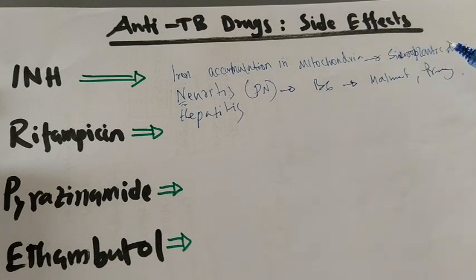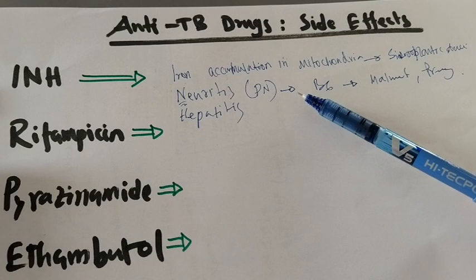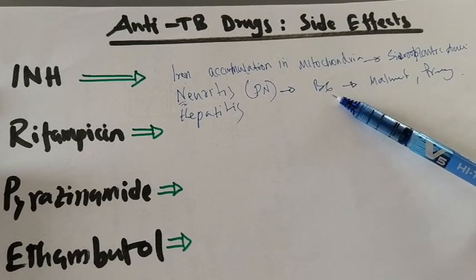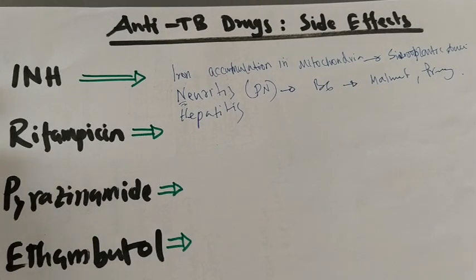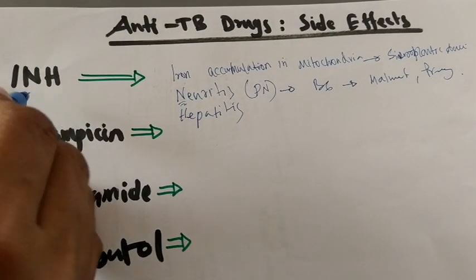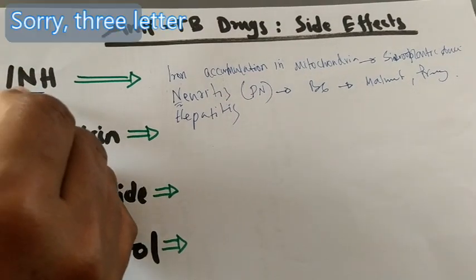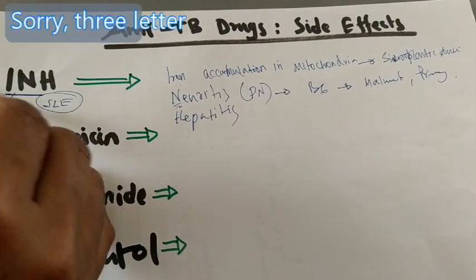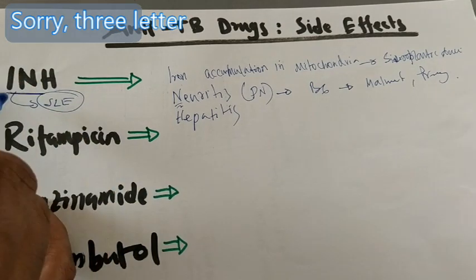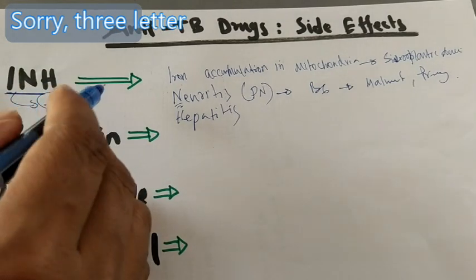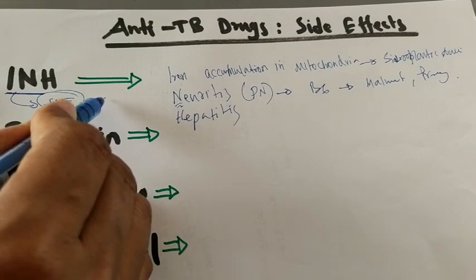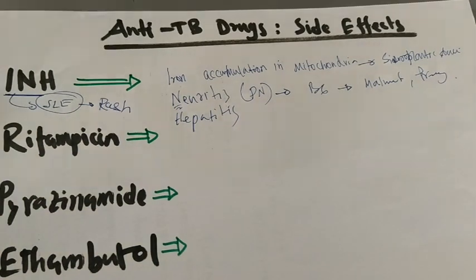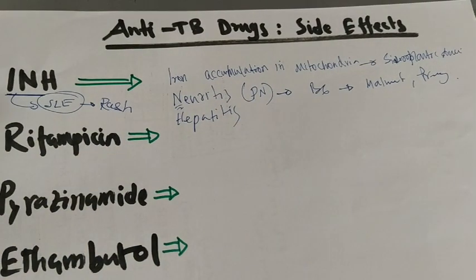So to recap: INH — I for iron accumulation in the mitochondria causing sideroblastic anemia, N for neuritis (peripheral neuropathy) prevented by Vitamin B6 supplementation, and H for hepatitis. Another tip: INH also causes SLE-like skin reactions — a lupus-like reaction with skin rash may be caused by Isoniazid.